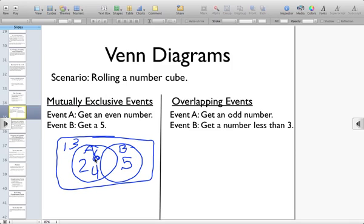Notice that for event A, 2, 4, 6 would be our possible outcomes. Event B, only the 5. Well, since 5 is not an even number, these are exclusive events. The outcomes do not overlap. There isn't a number I can roll that would fit both events.